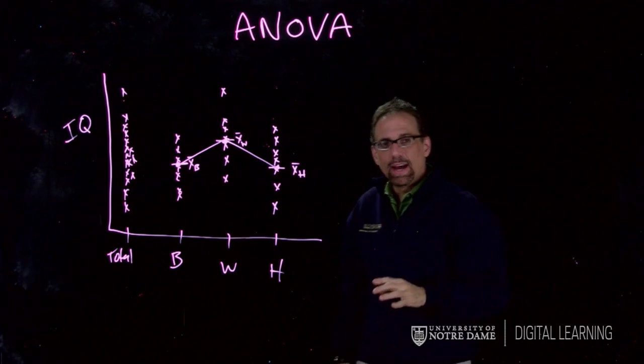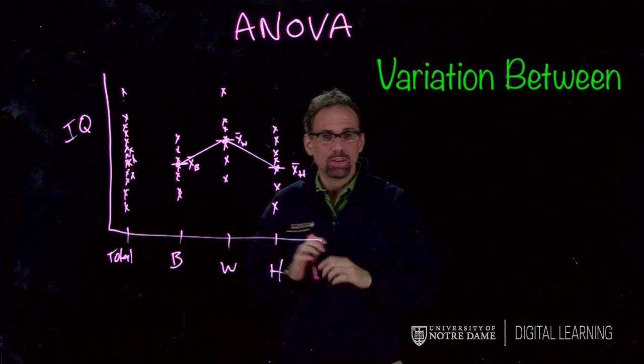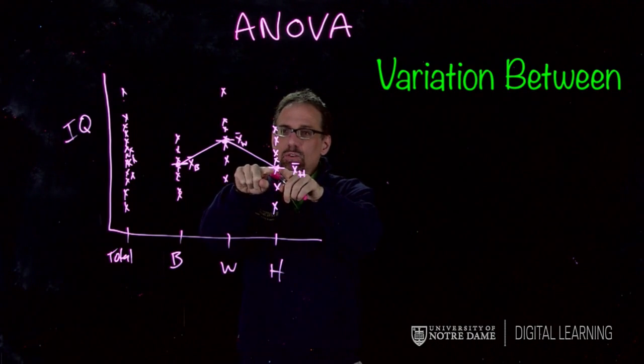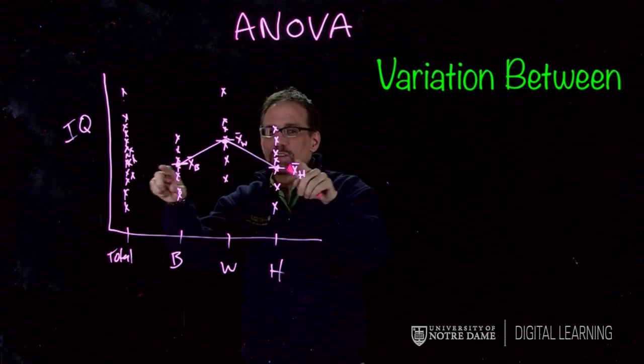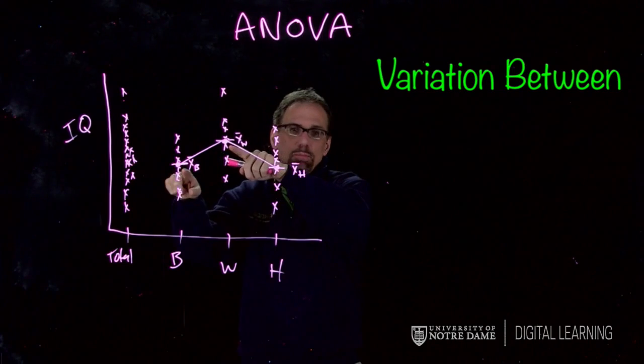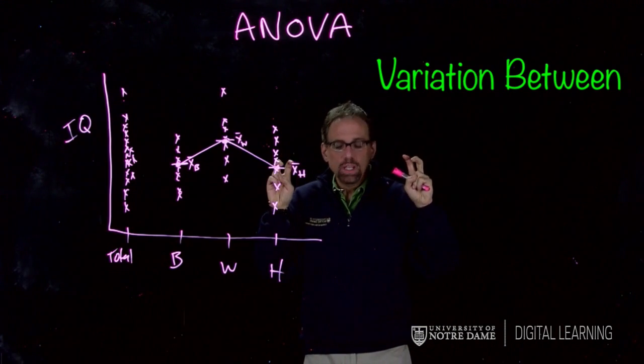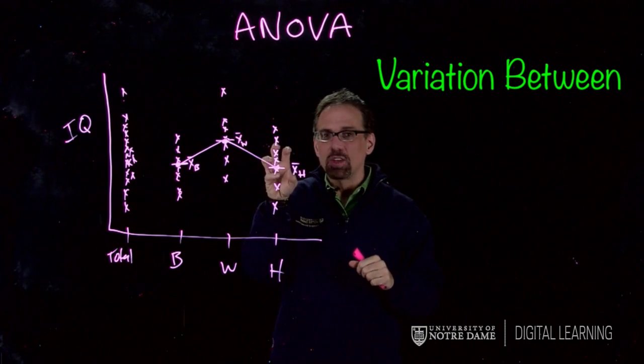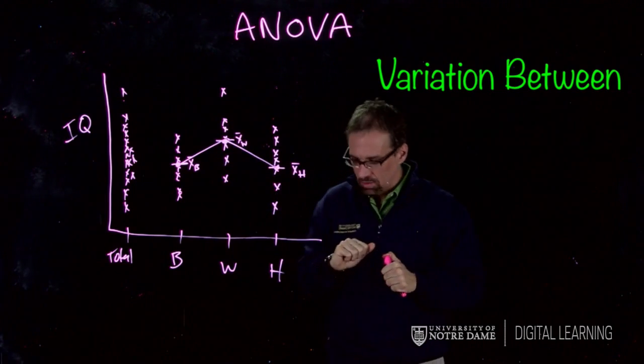Then I have variation between the groups - that's the difference between Blacks, Whites, and Hispanics, represented by these lines I drew here. If I took the overall mean, Whites would be above it and Blacks would be below it. That variation is the variation between groups, and that's what helps us compare the categories.